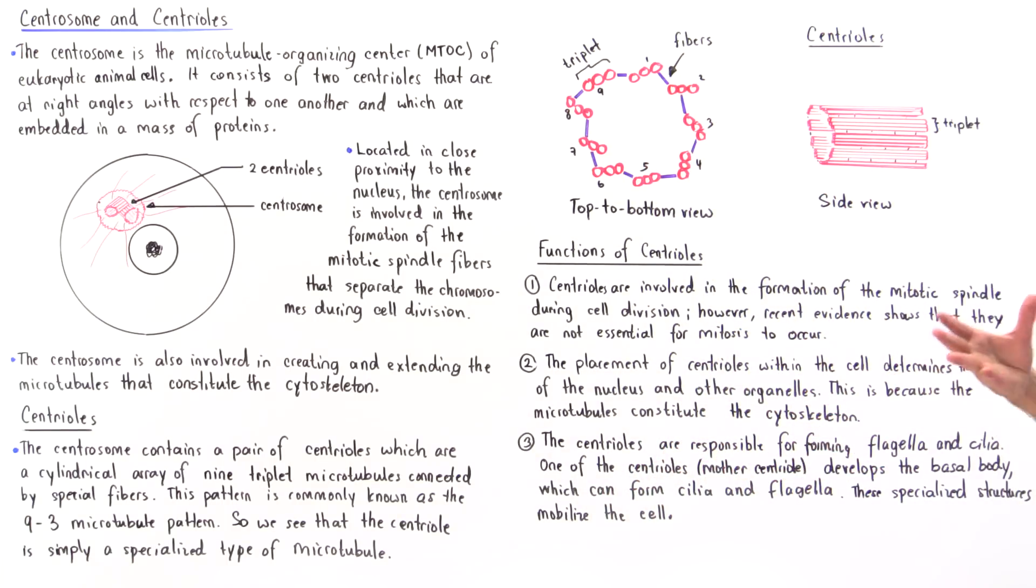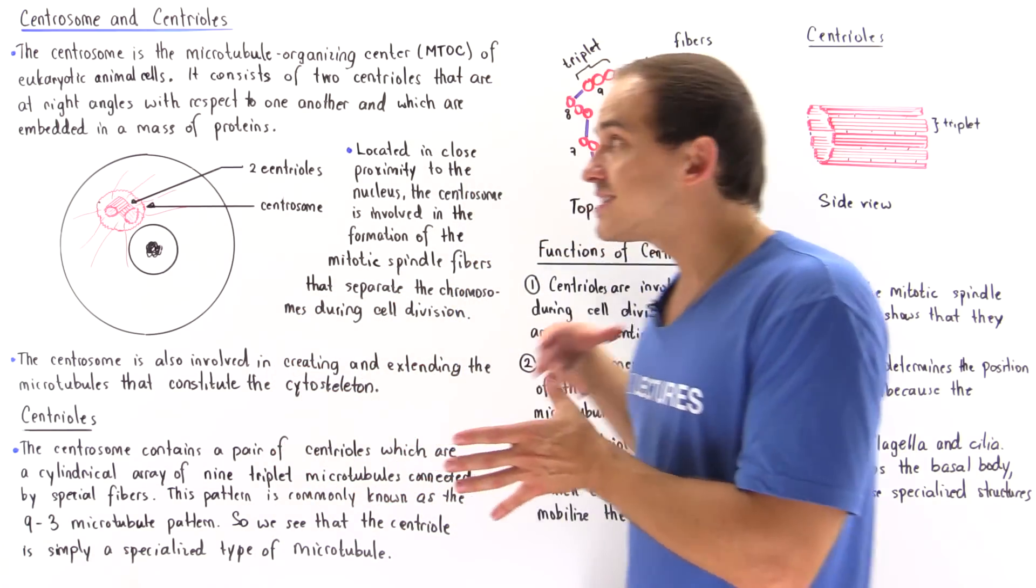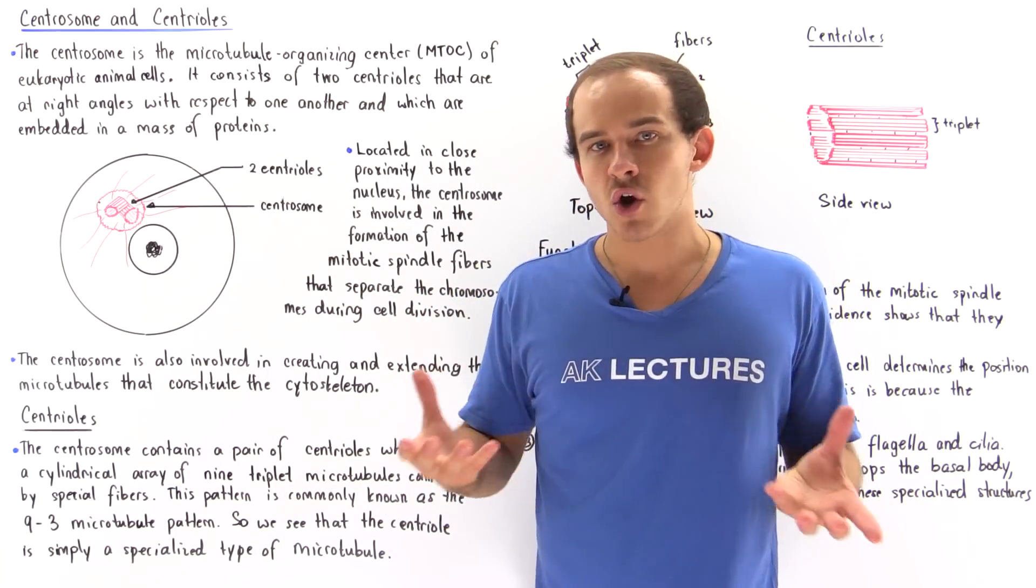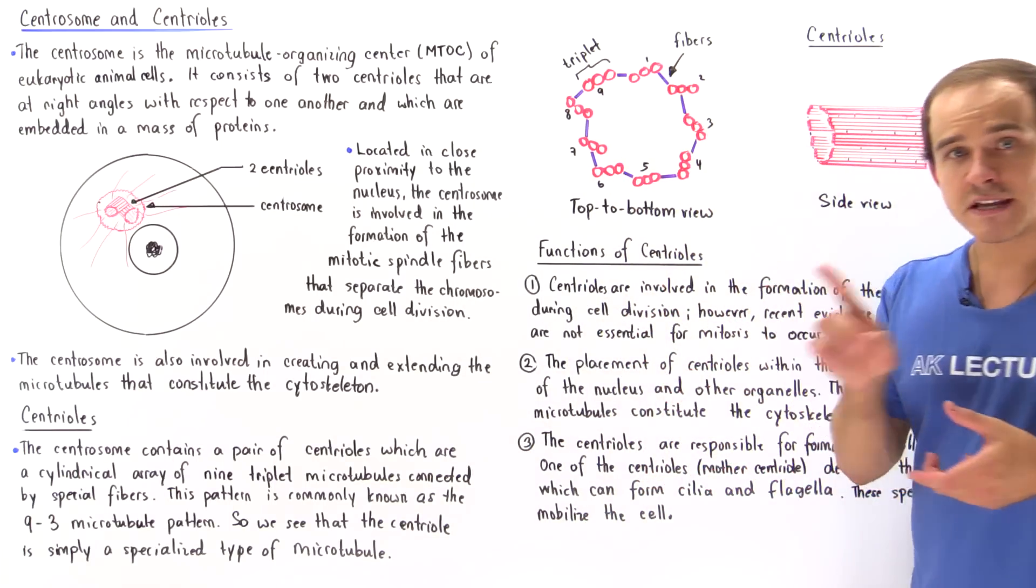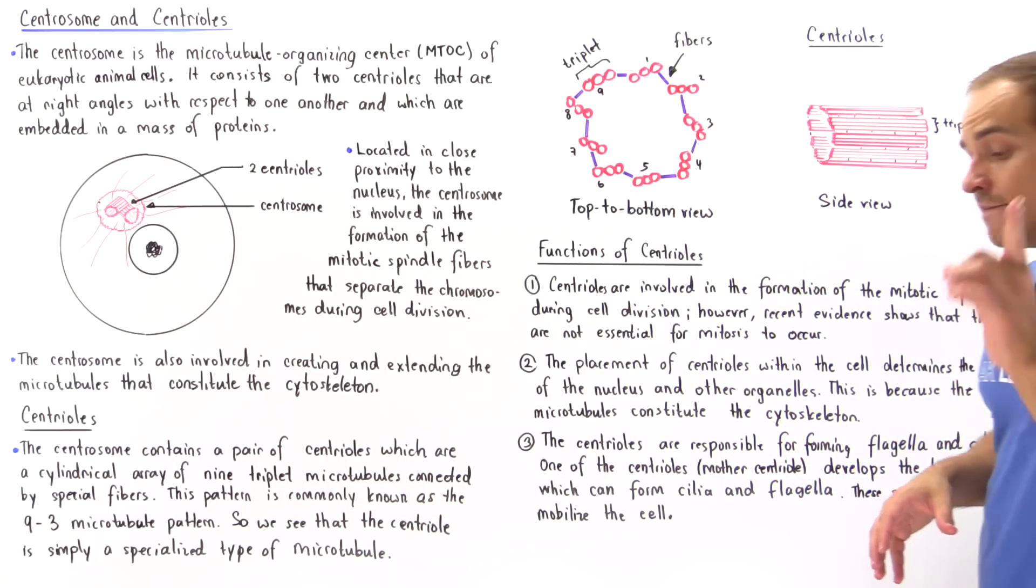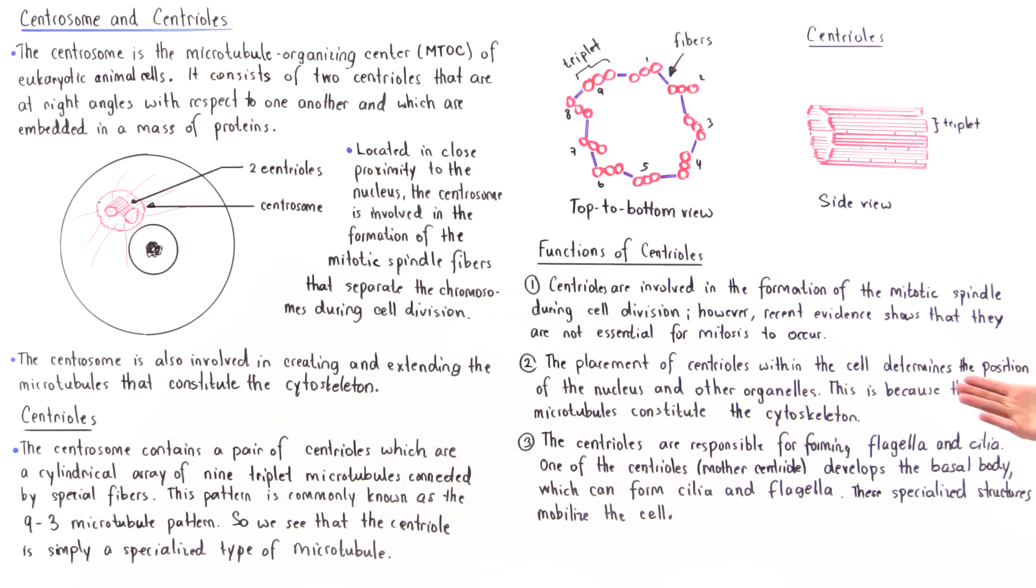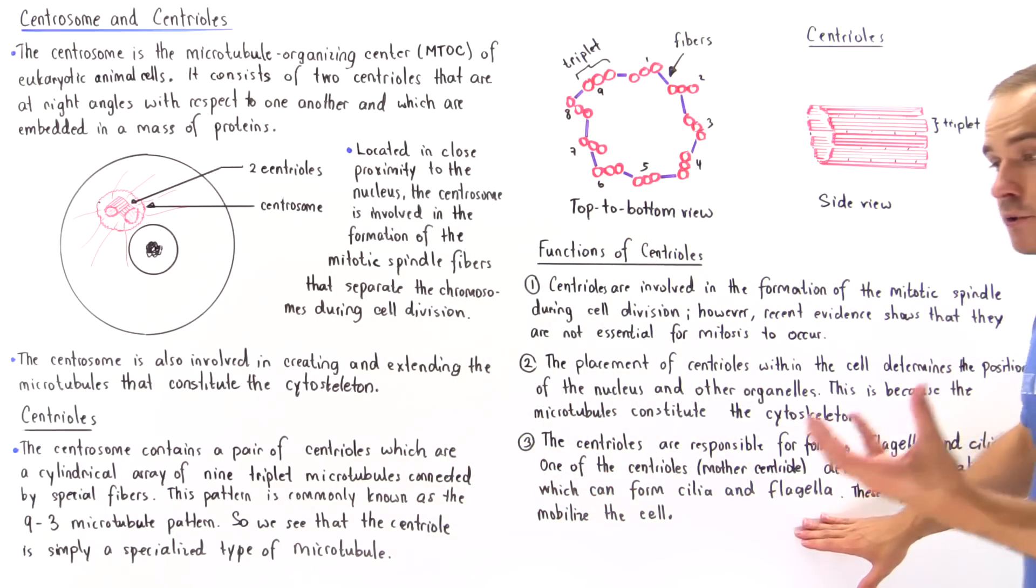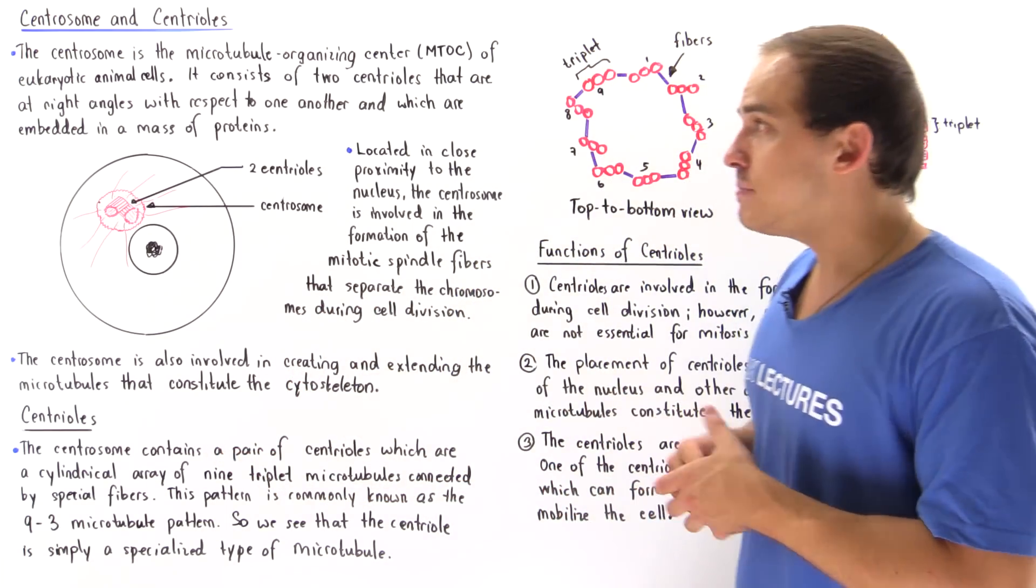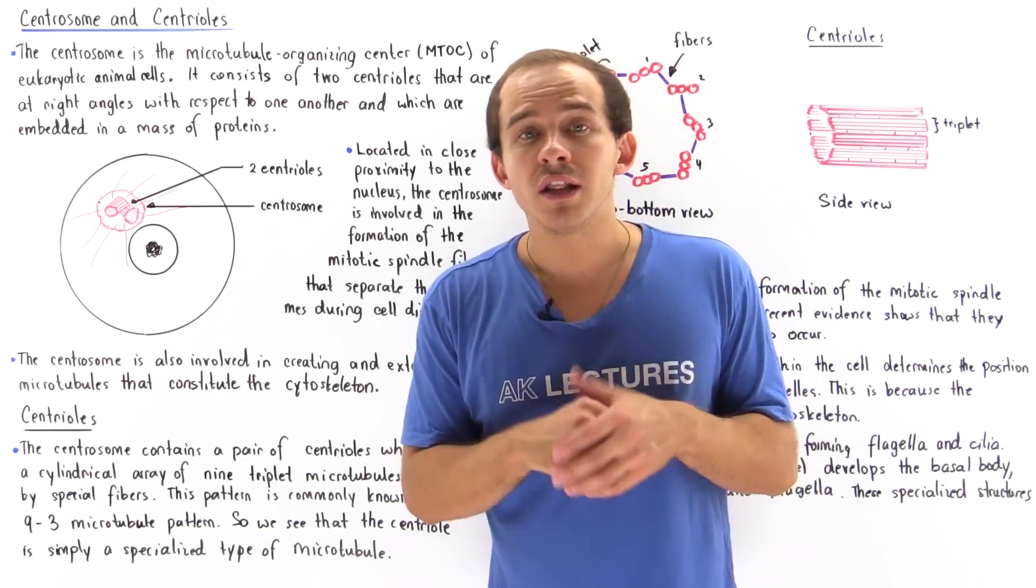We see that although centrioles are not exactly necessary for the survival of the individual cell, the centrioles and centrosomes are necessary for the survival of the organism as a whole. For example, if we examine a specific type of cell that needs flagella, our sperm cells, if our sperm cells do not have centrioles or centrosomes, they cannot form our basal body and they cannot form the flagella. A sperm cell without a flagella will not be able to reach the target cell, and that means our organism will essentially die off. It will not survive, although maybe individually the cells will in fact survive.